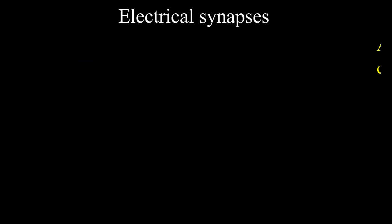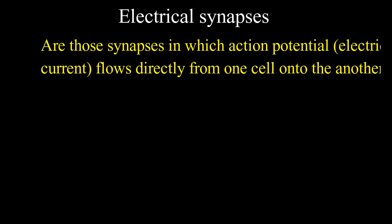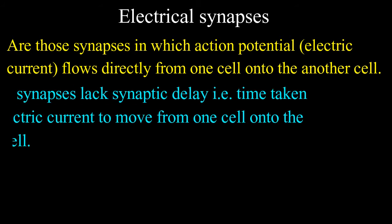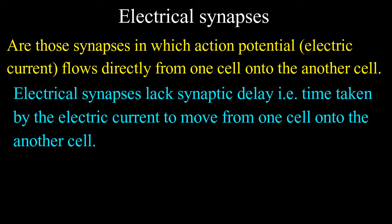Electrical synapses are synapses in which action potential or electric current flows directly from one cell onto another cell. Electrical synapses lack synaptic delay, that is the time taken by the electric current to move from one cell onto another cell.